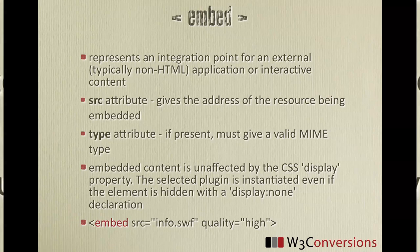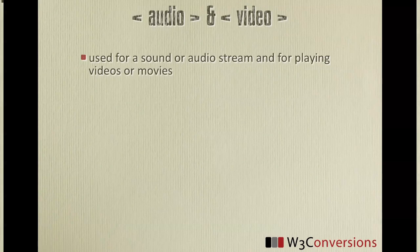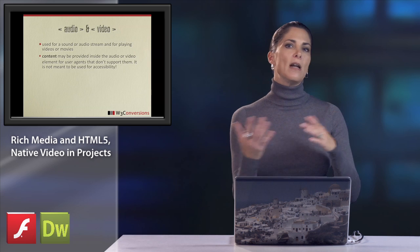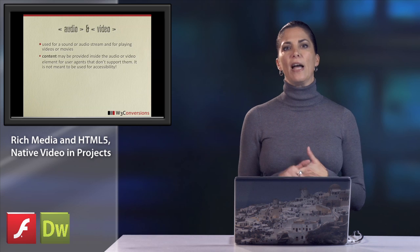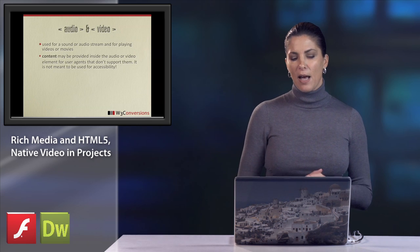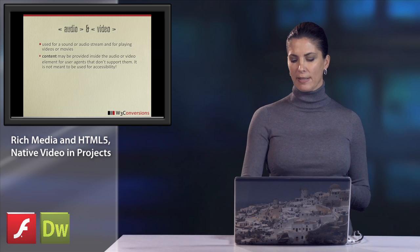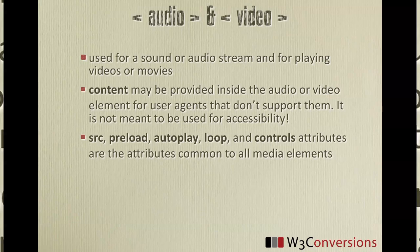Right now I want to talk about the two hot topics: native audio and video. These are very similar — one is for sound and one is for movies. They have an area within the tags for content, so that you can say this is not supported on your browser or device, or you can add fallback content. But it's not for accessibility — it's not for adding JavaScript to add subtitles or things like that. There are several attributes common to all media elements: source, preload, autoplay, loop, and controls.